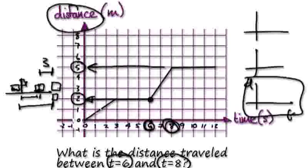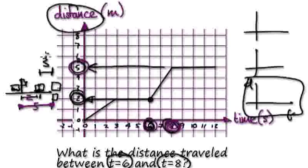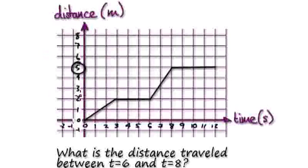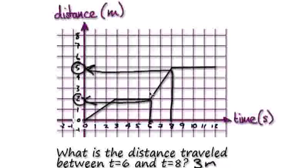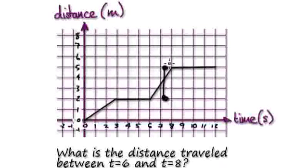So the distance traveled is really this gap here, which is 3. After 6 seconds the car is 2 meters away; after 8 seconds the car is 5 meters away. The distance traveled between 6 and 8 seconds is the gap between the two, which is 3. It's really this take away this — 5 minus 2. So the answer is 3 meters. It's a matter of straight reading — the vertical gap on the distance-time graph.